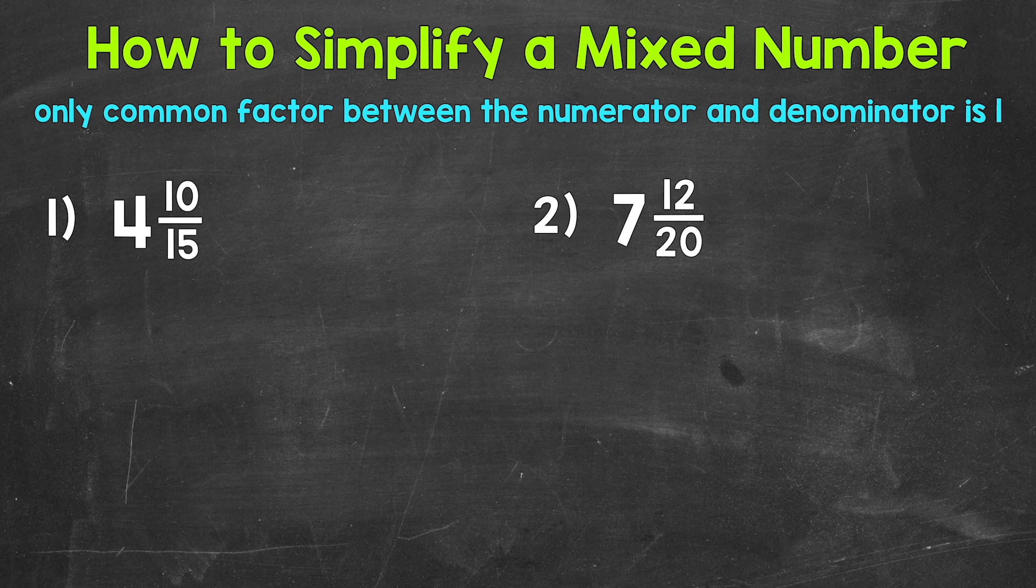Now, when the only common factor between the numerator and denominator is one, we are in simplest form. So again, we only simplify the fractional part of a mixed number and we leave the whole number. So 10 fifteenths, what are some common factors of 10 and 15?